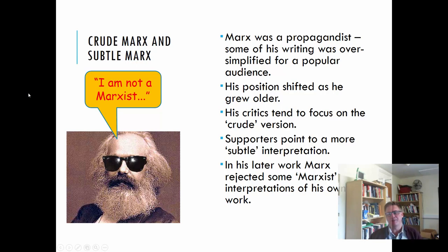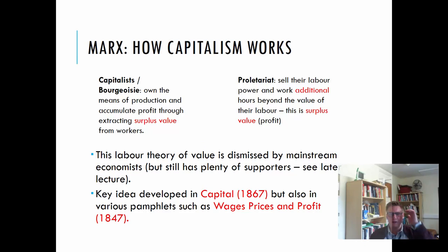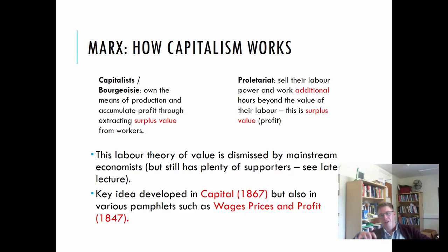On one hand we've got the capitalists or bourgeoisie — they own the means of production and accumulate profit through extracting surplus value from workers. On the other hand you've got the proletariat who sell their labor power and work additional hours beyond the value of their labor. This is called surplus value. Say you get a job making something and you're paid £200 a week — in that week you produce £500 worth of materials that the company then goes on to sell.